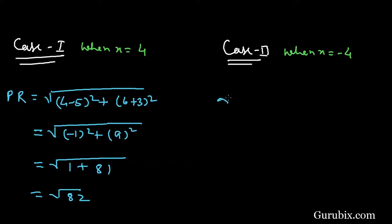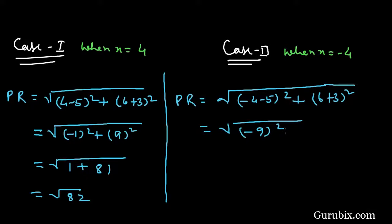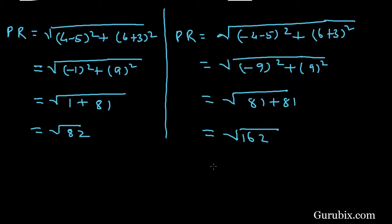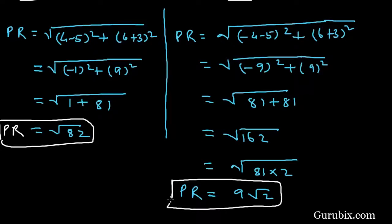In Case 2, when x = -4, PR = √[(-4 - 5)² + (6 + 3)²] = √[(-9)² + 9²] = √[81 + 81] = √162 = √(81 × 2) = 9√2. So there are two different values of PR when x = +4 and x = -4. This is the solution of the question. Thank you.